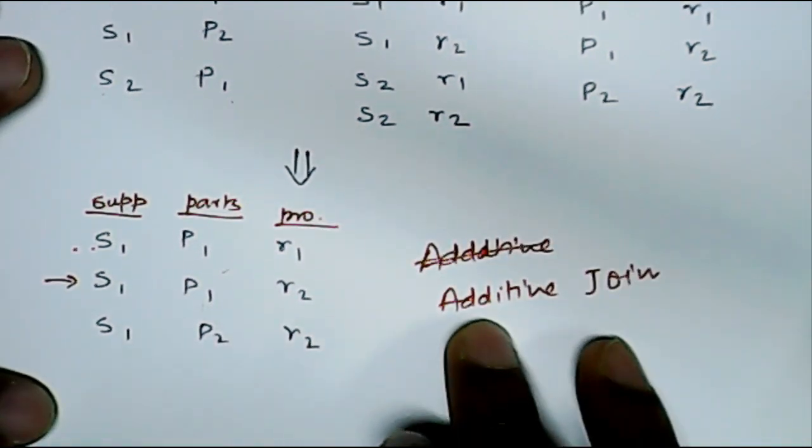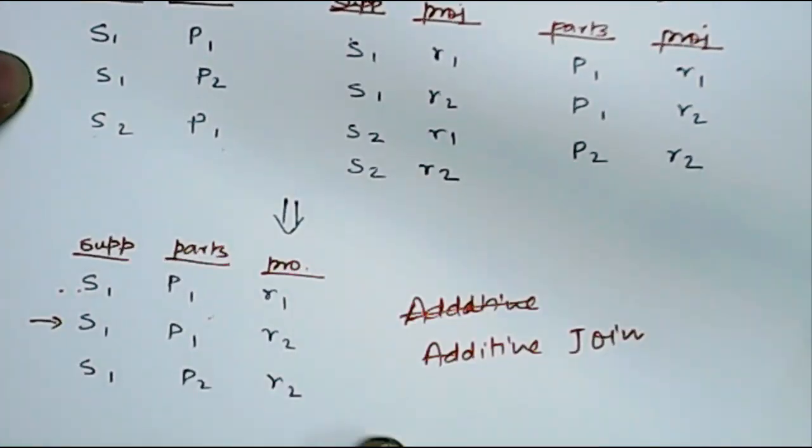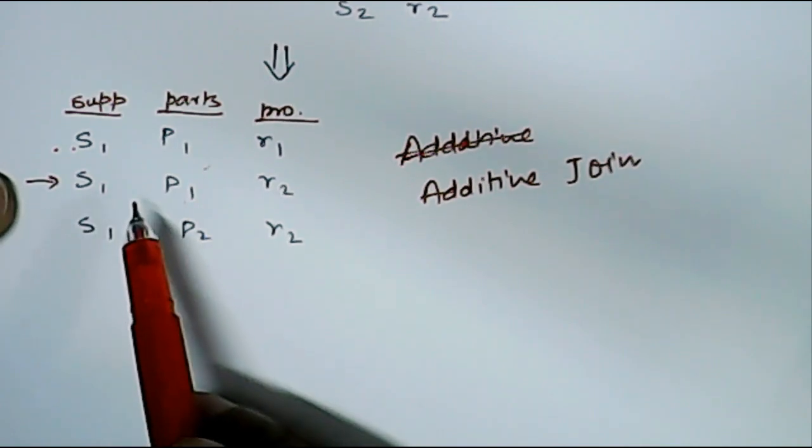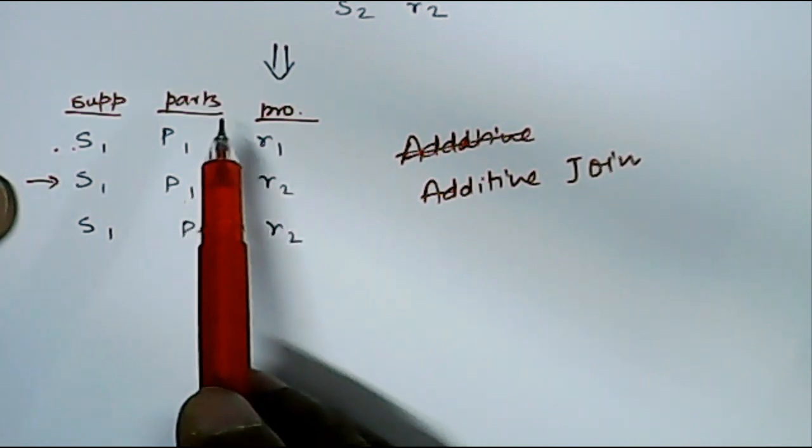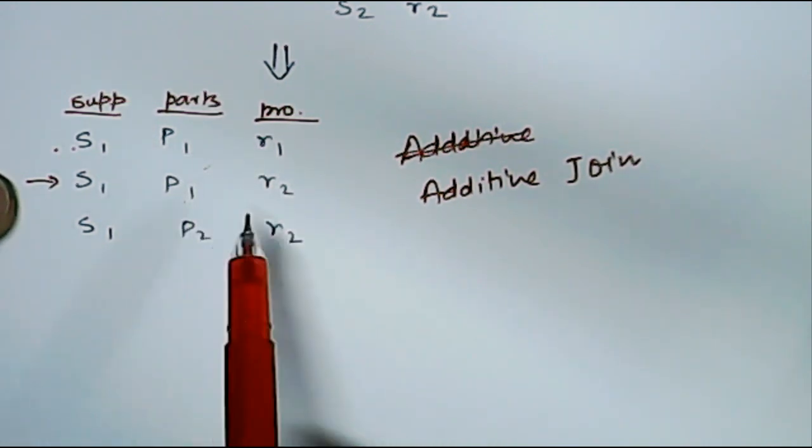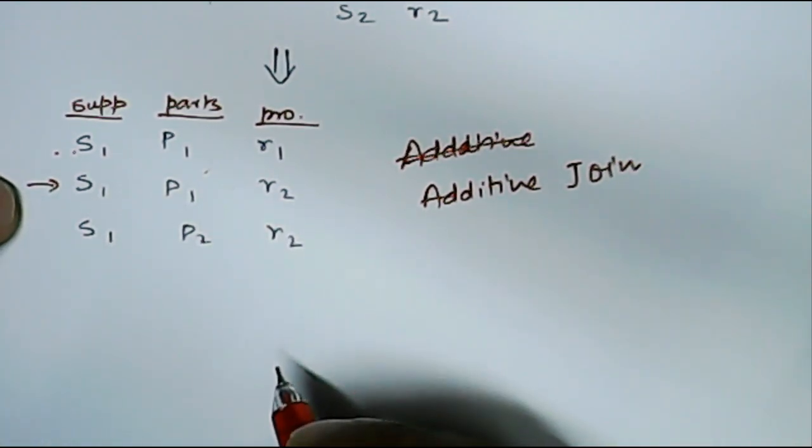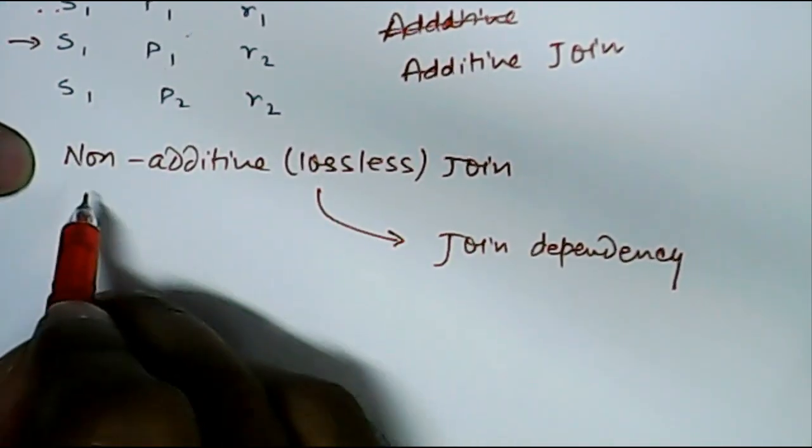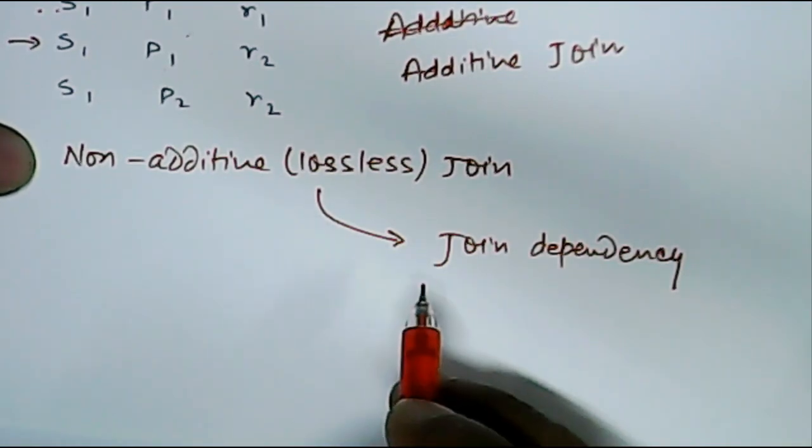It means this join is an additive join, meaning we are getting some extra rows after joining the decomposed tables back. But if we don't get any extra records after joining, then we call it a non-additive lossless join. Lossless because we are not losing any information. So if this join is non-additive lossless join, then we say that this is join dependency.